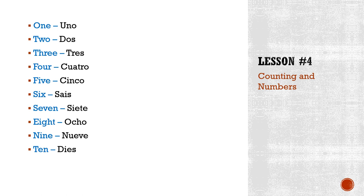Going further: eleven is once, twelve is doce, thirteen is trece, fourteen is catorce, fifteen is quinze, sixteen is dieciséis, seventeen is diecisiete, eighteen is dieciocho, nineteen is diecinueve, twenty is bainte or viente — but most locals would say bainte.